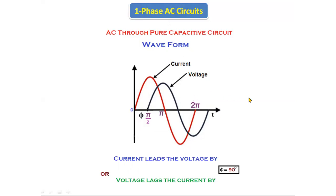To summarize: in the pure inductive circuit, current lags the voltage by 90 degrees; in the pure capacitive circuit, current leads the voltage. This is about the pure resistive circuit, pure inductive circuit, and pure capacitive circuit — the behavior of AC through pure R, pure L, and pure C circuits.